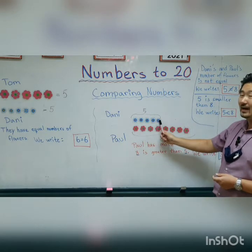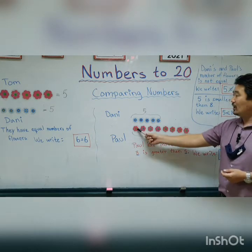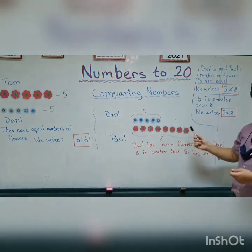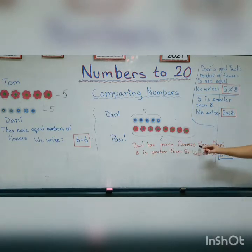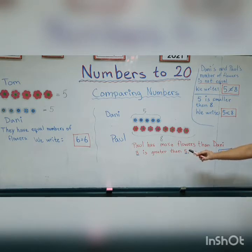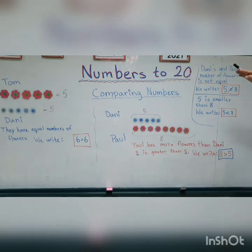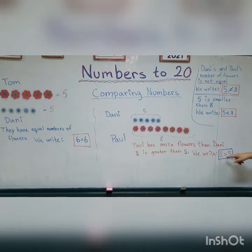In this scenario Danny has one, two, three, four, five blue flowers, but then we have Paul and he has one, two, three, four, five, six, seven, eight red flowers — eight red flowers. So Paul has more flowers than Danny. Eight is greater than five. We write greater than as: eight, then the crocodile mouth, then five. The crocodile mouth opening should point to the bigger number because the crocodile must eat the bigger number.